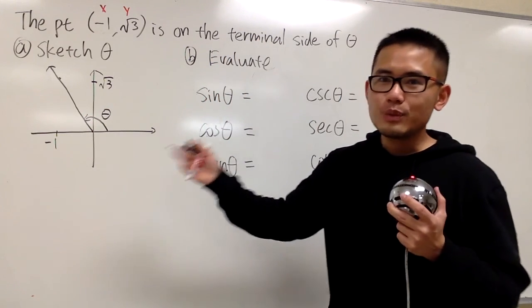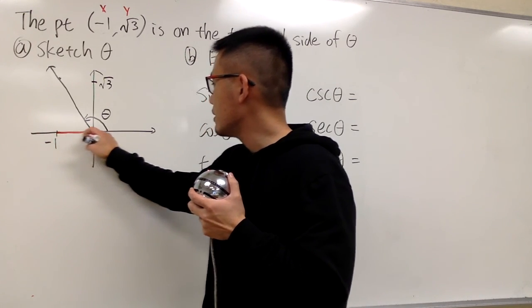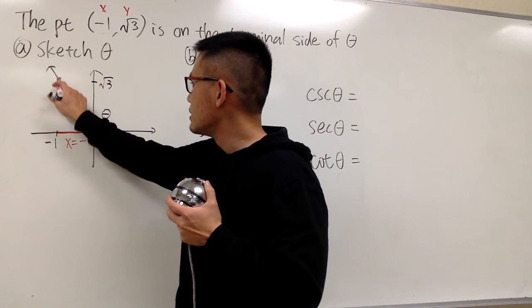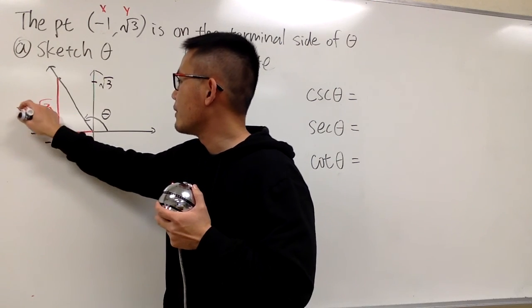In this case, we can draw a right triangle, because as you can see, it's right here, that's the x value, it's negative 1, and the y value is the vertical distance, which is the square root of 3.